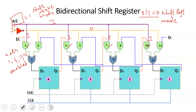Since the yellow line is 0, gates 2, 5, 8, and 11 have one input as 0, so their output is 0 and they are disabled. In shift-right mode, only the gates connected to the purple line — gates 1, 4, 7, and 10 — are active and pass the data through.